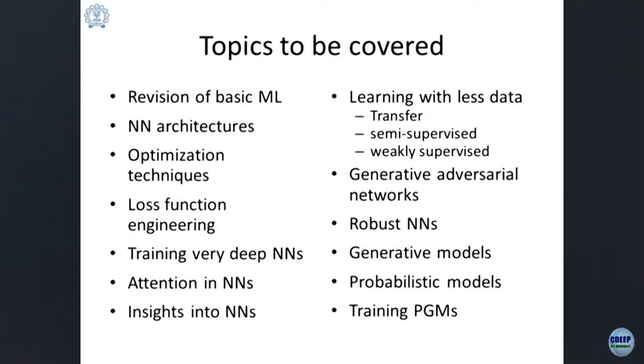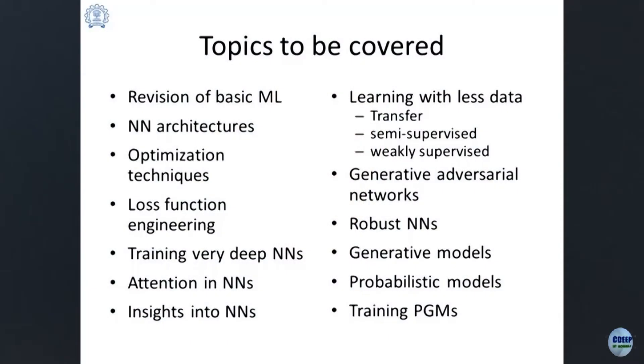What we will cover in this course includes deep neural networks — including those for computer vision and natural language processing — as well as probabilistic graphical models, which make more complete use of data, can handle missing data, and make associations among different variables that may not even be arranged as a pixel grid or as words in a sentence. We will also look at situations where we have inadequate data and how to use advanced concepts such as transfer learning, semi-supervised learning, weakly supervised learning, or active learning to learn from fewer labeled examples.